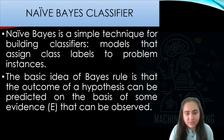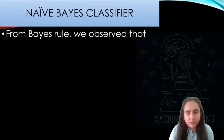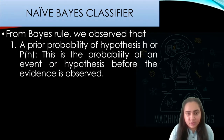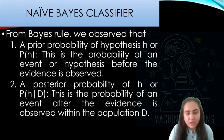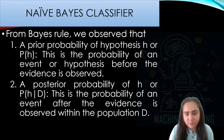The basic idea of Bayes rule is that the outcome of a hypothesis can be predicted on the basis of some evidence that can be observed. From Bayes rule, we have observed certain things. One is the prior probability of hypothesis H, or P(H), which is the probability of an event or hypothesis before the evidence was observed. There is also a posterior probability of H, called P(H|D), which is the probability of an event after the evidence is observed within the population D.